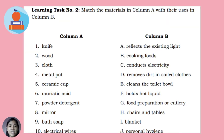For Learning Task 2, match the material in Column A with their uses in Column B. Column A: knife, wood, cloth, metal pot, ceramic cup, muriatic acid, powder detergent, mirror, bath soap, and electrical wires. Column B: A - reflects existing light; B - cooking foods; C - conducts electricity; D - removes dirt in soiled clothes; E - cleans the toilet bowl; F - holds hot liquid; G - food preparation or cutlery; H - chairs and tables; I - blanket; J - personal hygiene.